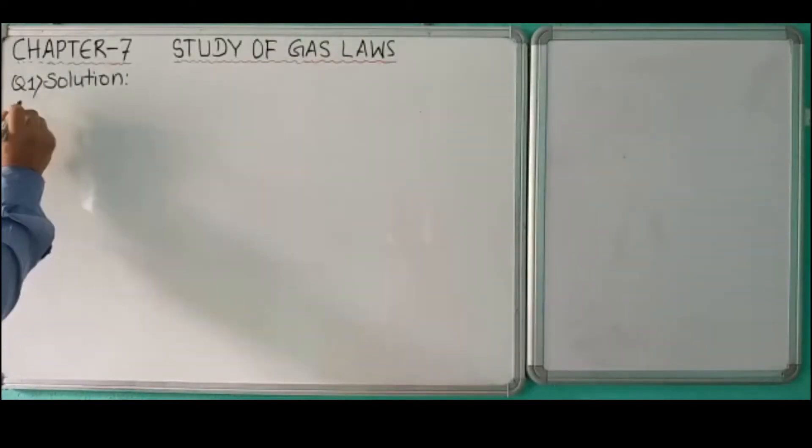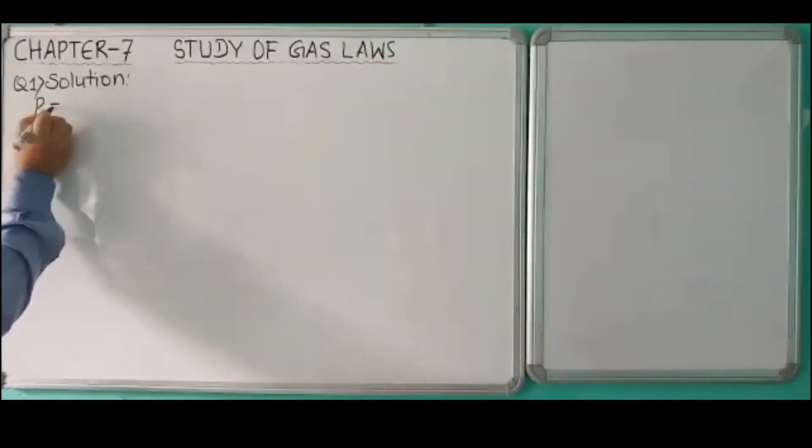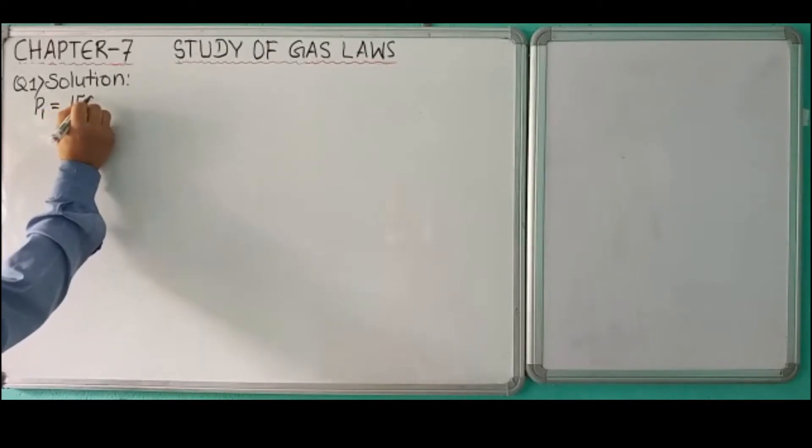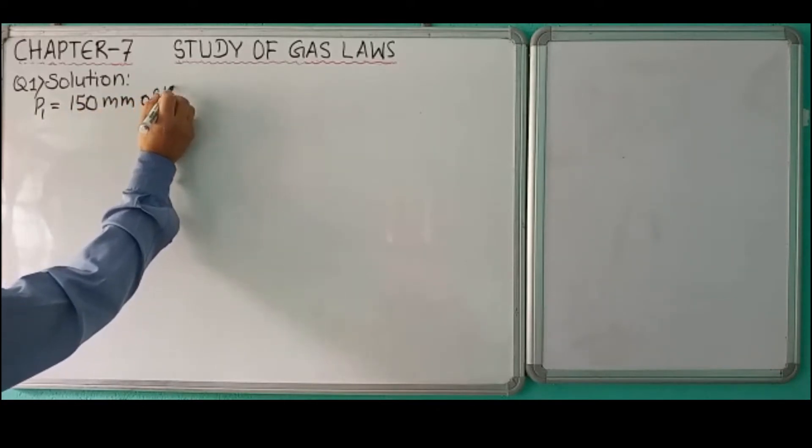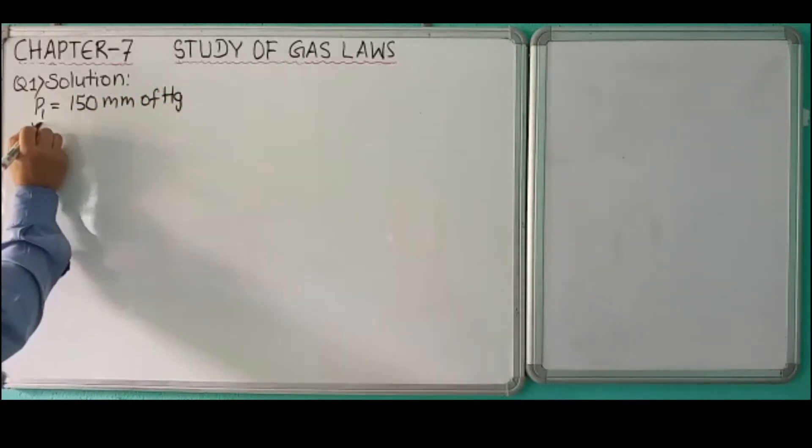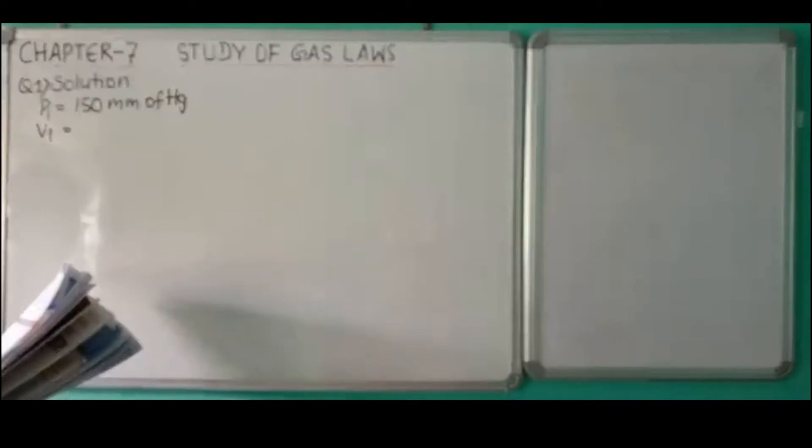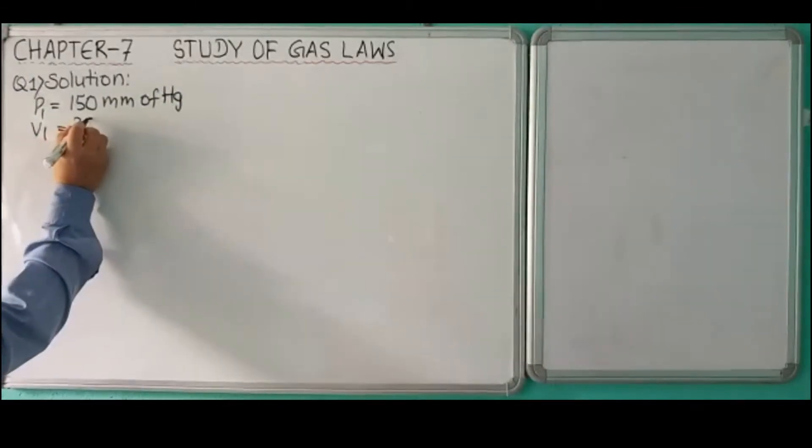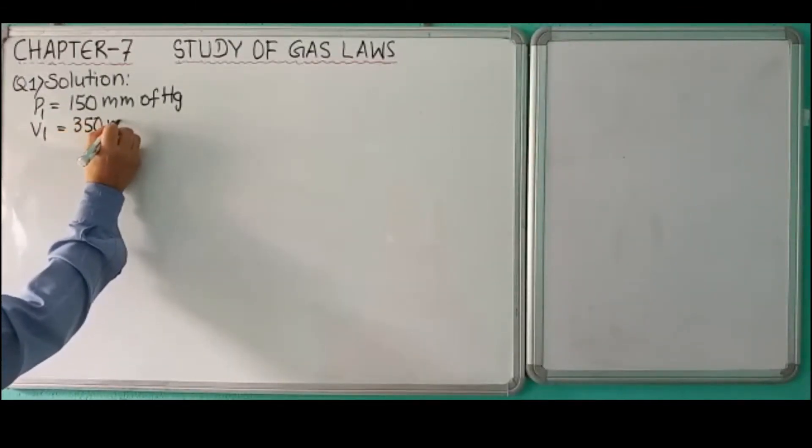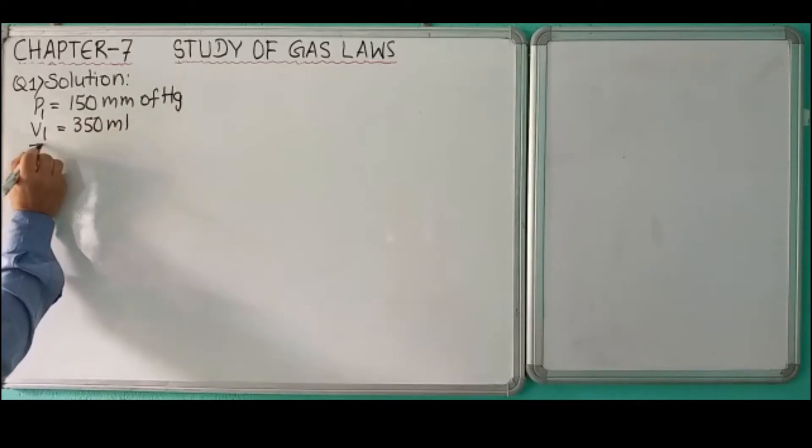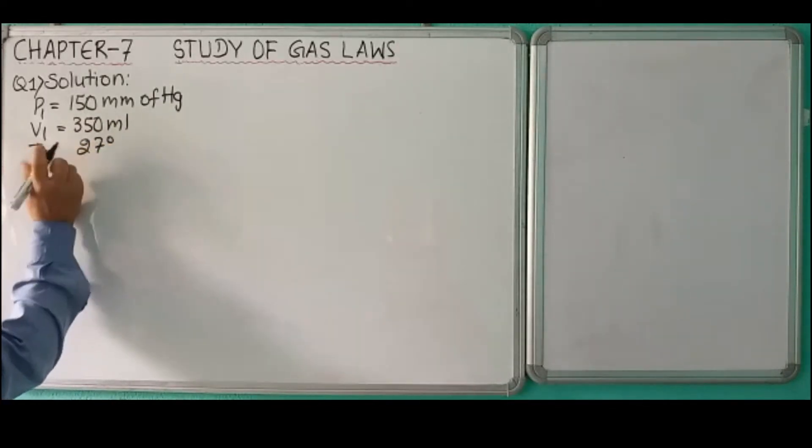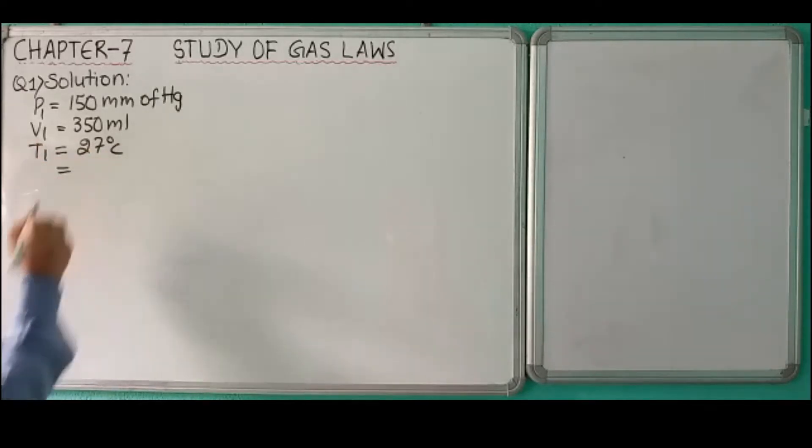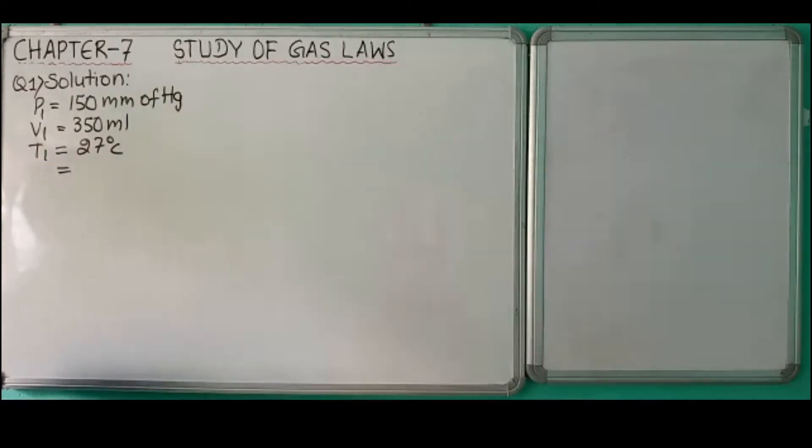In this case, P1 is given as 150 millimeters of mercury and V1 is given as 350 milliliter. T1 is given as 27 degrees Celsius. We'll convert Celsius to Kelvin by adding 273 to the given value.